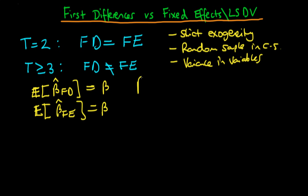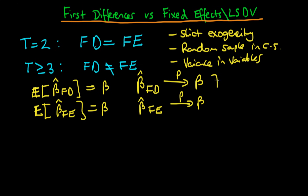Under the same assumptions, and even slightly less restrictive ones, the first differences estimator is consistent, and similarly so is the fixed effects estimator. They're both consistent — here we're talking about circumstances where N tends to infinity — so we need another criterion to compare these two estimators.